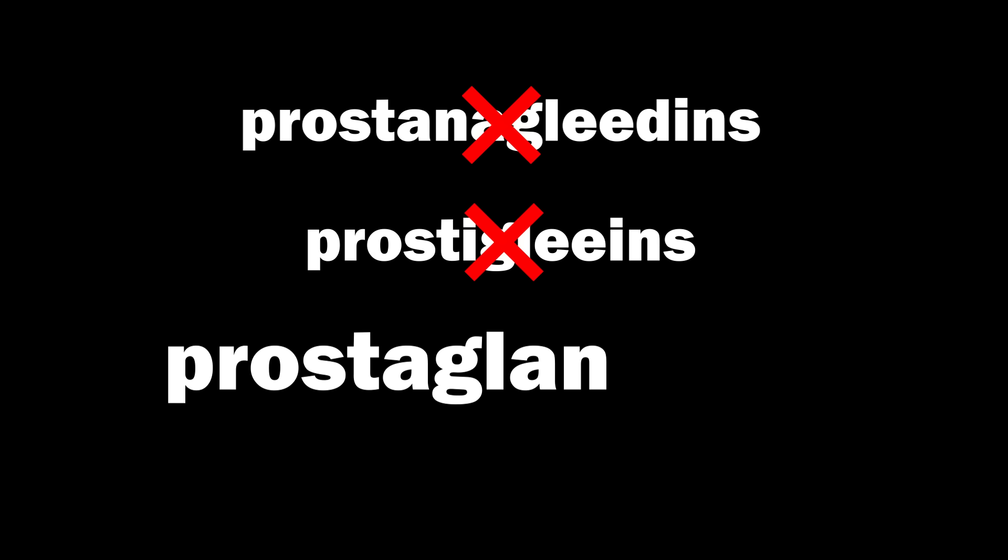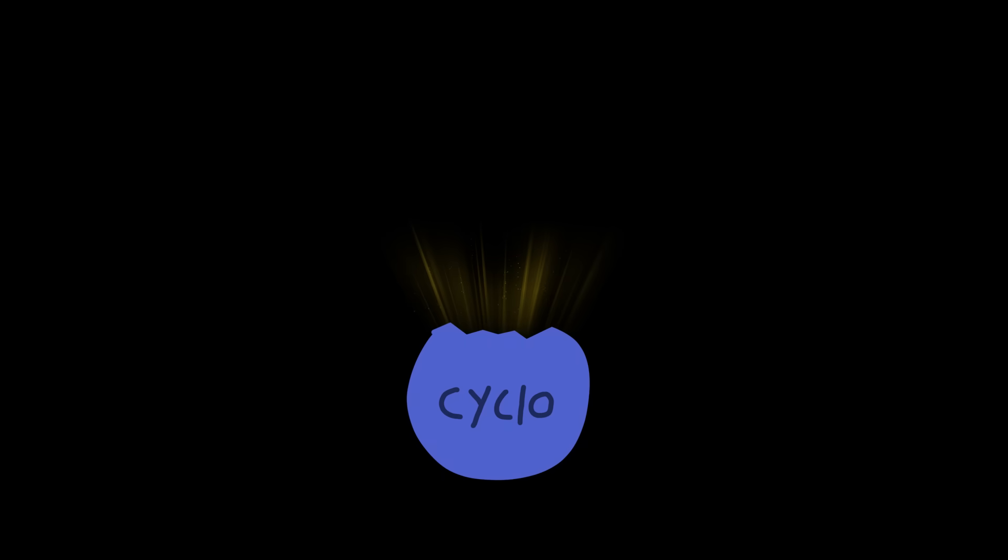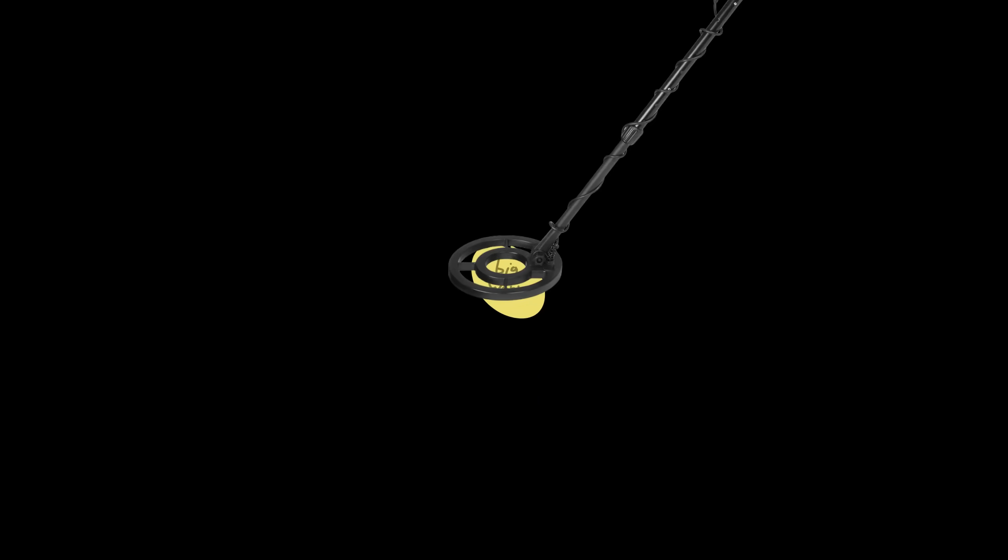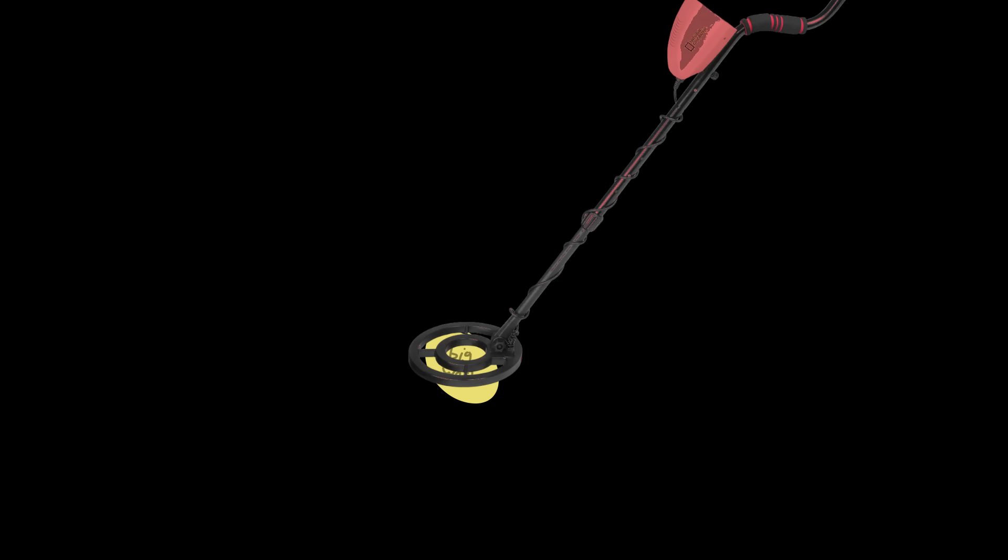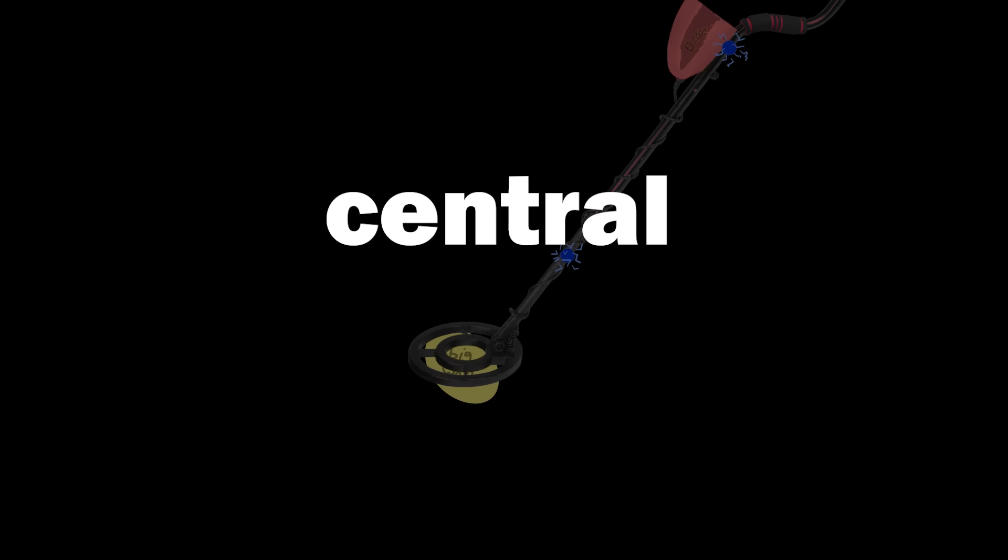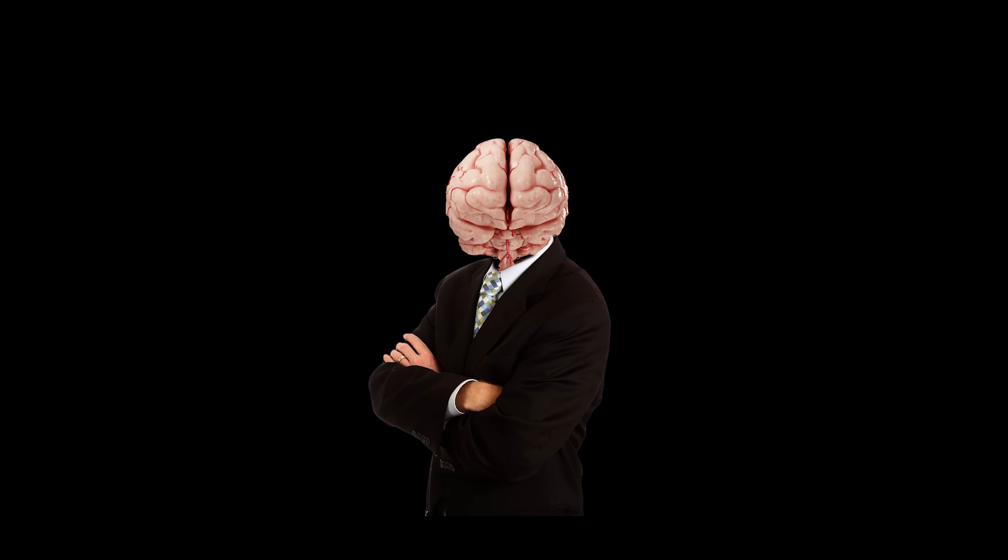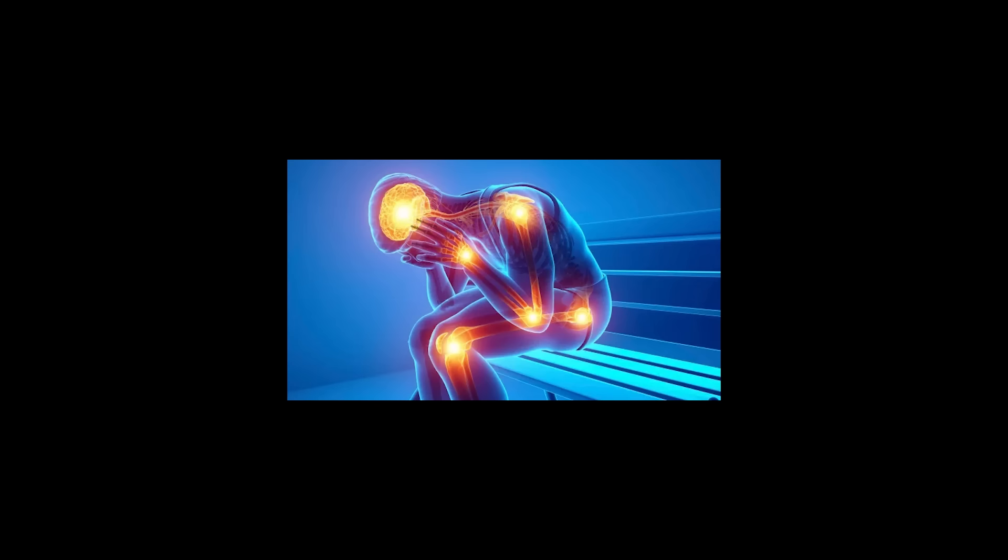They then turn them into something new. Prostaglandins. Once this stuff is released, it quickly binds onto receptors in your peripheral nervous system. That's the nervous part of your nervous system. Then your peripheral nervous system sends signals using electricity to your central nervous system. The big guy. Brain cells then interpret these signals as pain and inflames the area that's hurting.